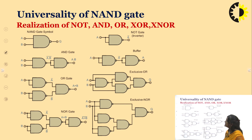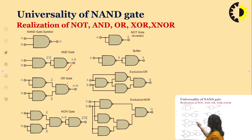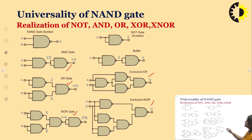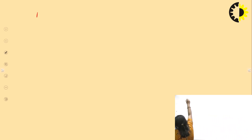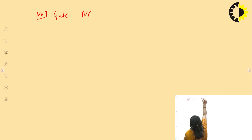Now, how we can realize NAND, AND, OR, NOR, XOR, and XNOR gates using only NAND gates. We have designed the AND gate with the help of NAND gate, the OR gate with the help of NAND gate, the NOR gate with the help of NAND gate, and the XOR and XNOR using NAND gate.